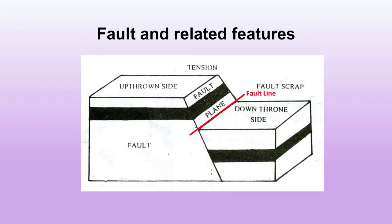As you can see in the diagram, the red line marked is the fault line along which displacement occurs. The upper portion is the upthrown side, which is thrown upwards, and the lower is the downthrown side. The fault line and fault plane are visible, and this diagram shows a fault and its different related features.